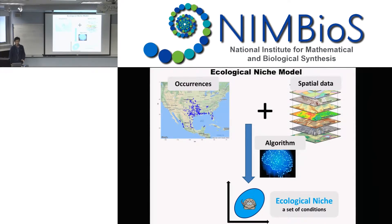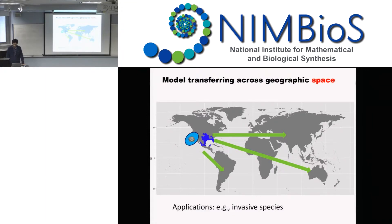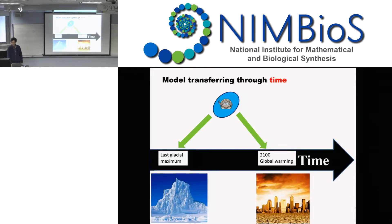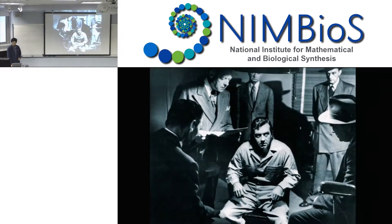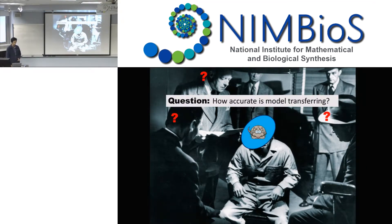We all know the ecological niche model takes the current data and the environmental data, throws that to the algorithm, and then we can get an estimate of the ecological niche — here I mean the abiotic niche or the fundamental niche. Model transfer is very frequently used; models can be transferred across space or projected across time. But the question is: is such model transfer accurate?